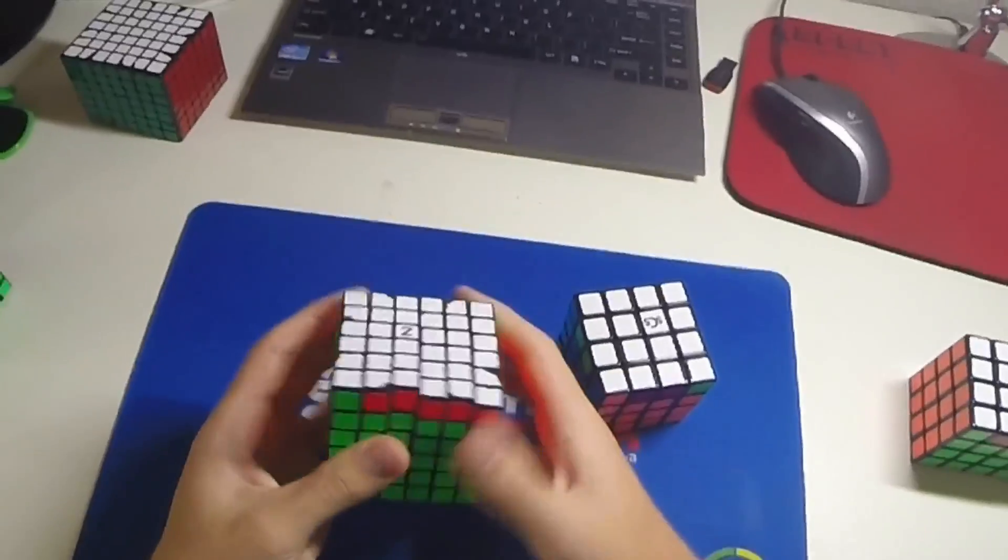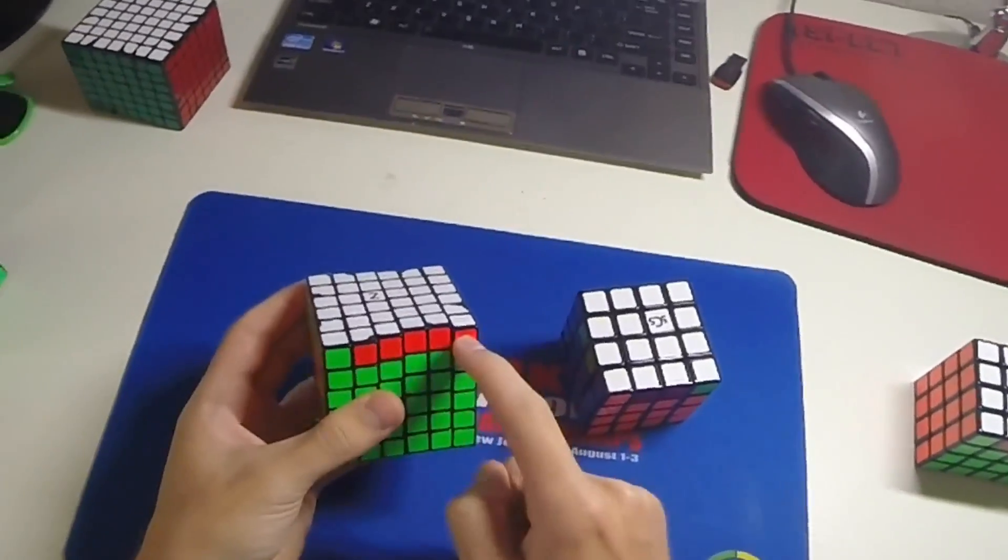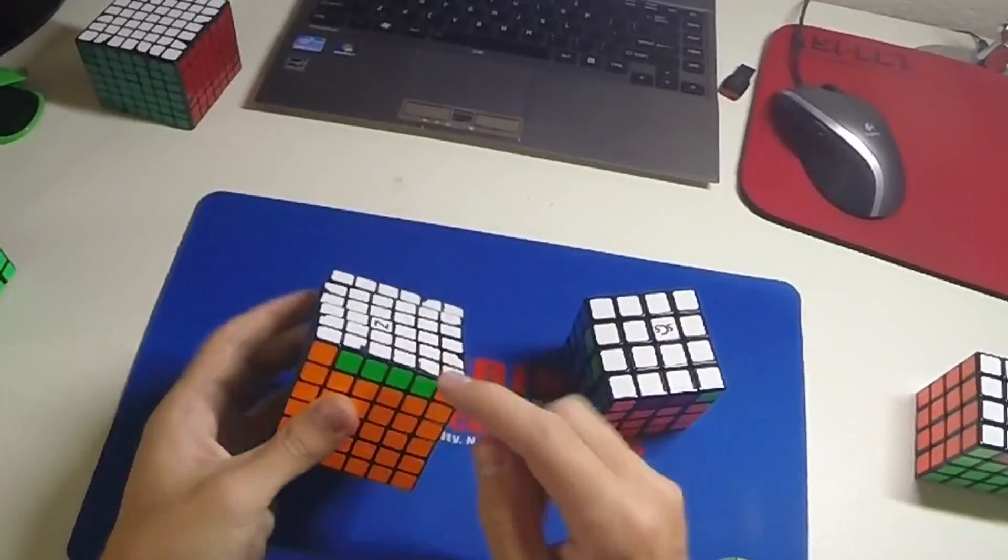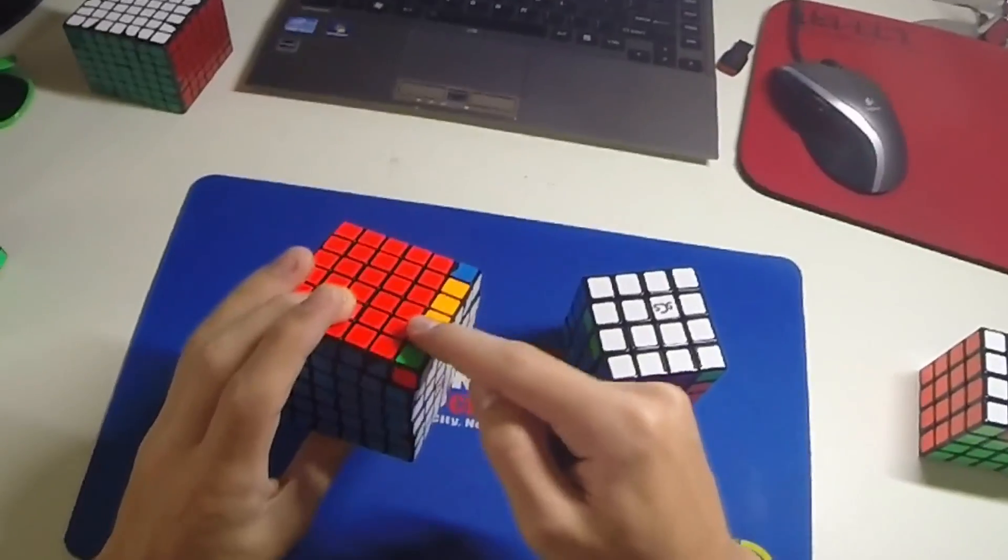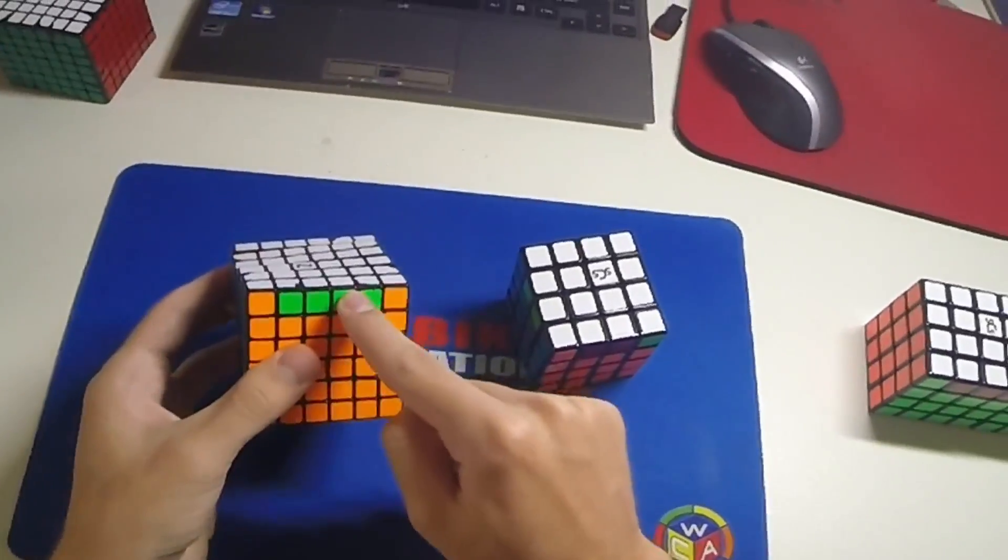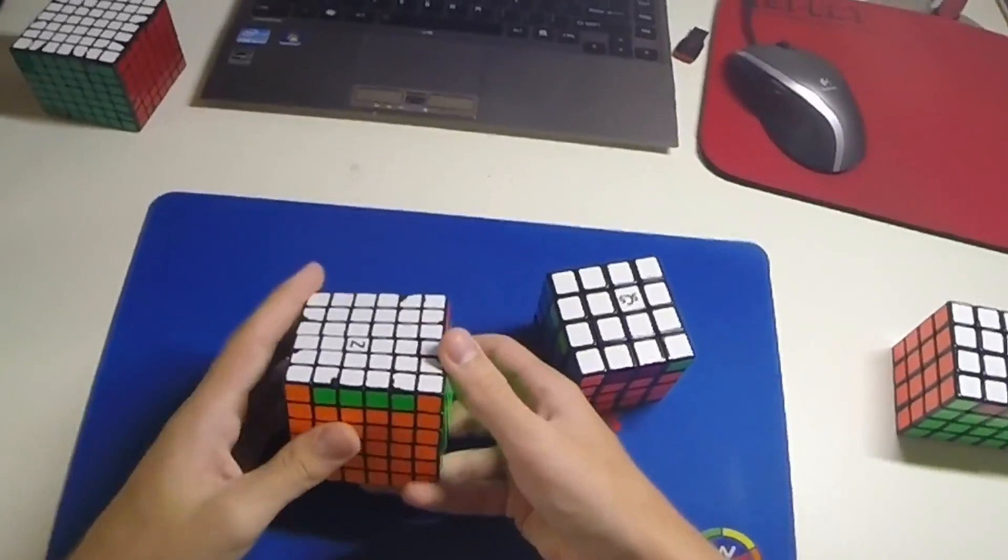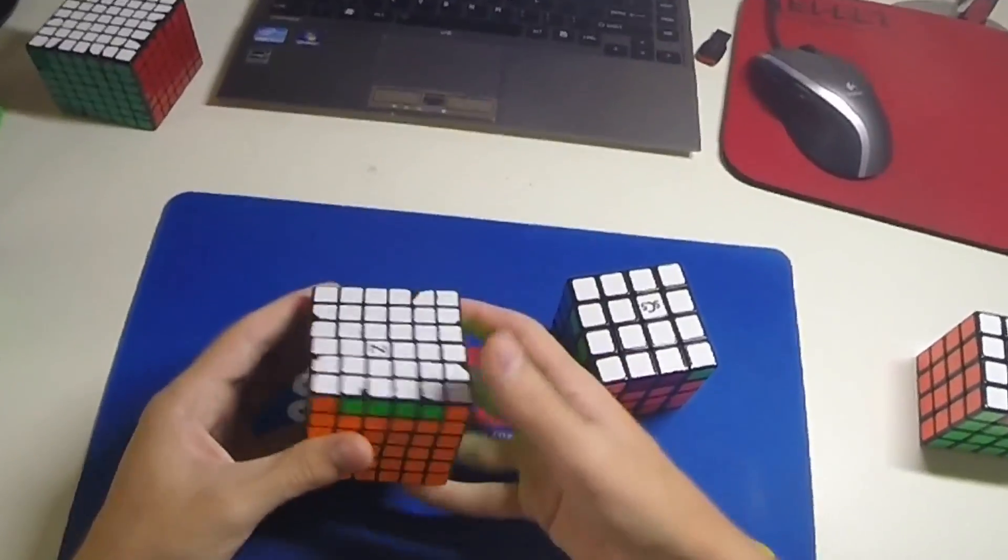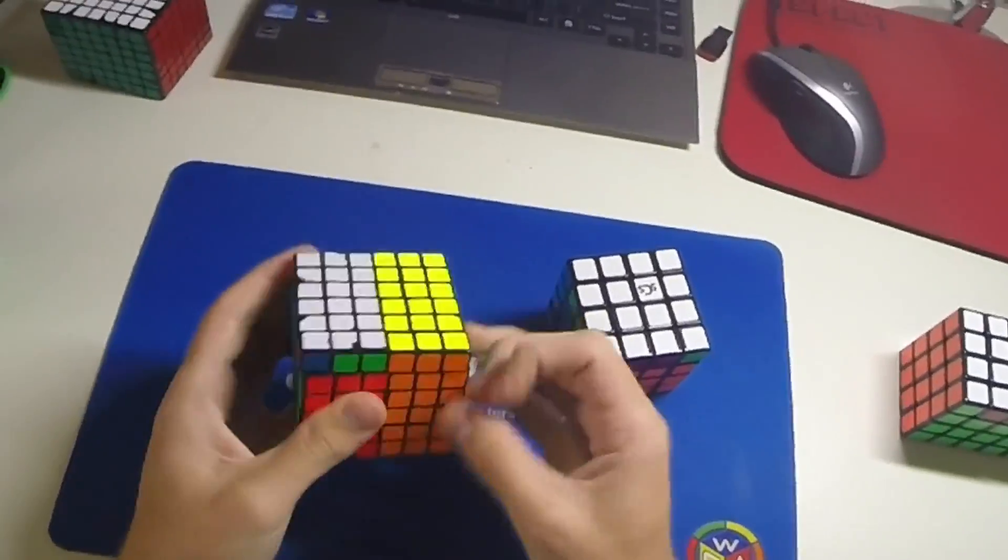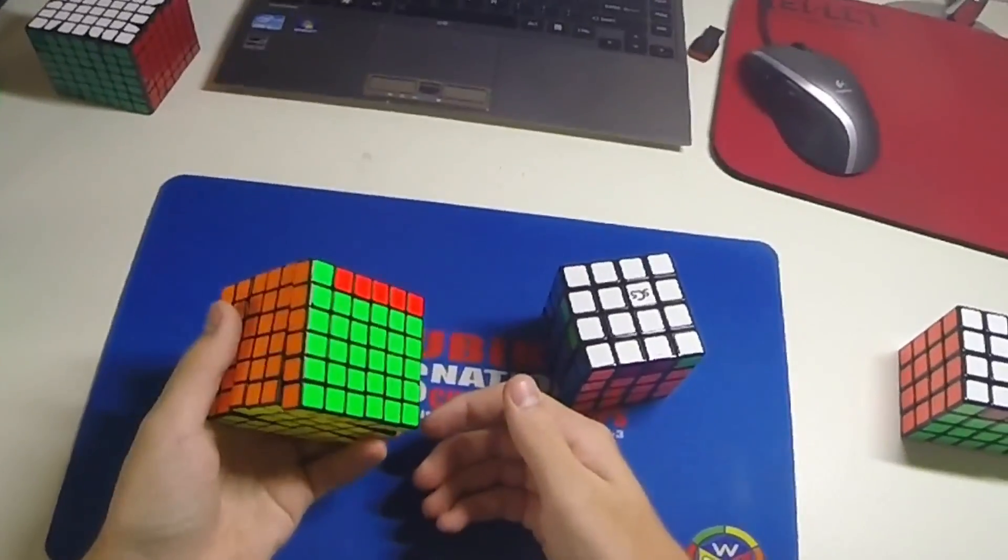What we should notice is we have this bar here, and also this bar here, and also we see that we've got this orange piece that will come to the front when we do PLL parity algorithm. So that will set up a J perm for us if we do the PLL parity algorithm from this angle, which is much nicer.